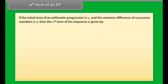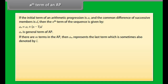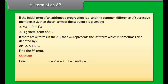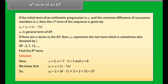If the initial term of an arithmetic progression is A1 and the common difference of successive numbers is D, then the nth term is given by AN = A1 + (N−1)D. This is also called the general term of the AP. Using this formula, let's find the 8th term of the given AP where A = 2, D = 7−2 = 5, and N = 8. A8 = 2 + (8−1)×5 = 2 + 35 = 37. Therefore the 8th term of the given AP is 37.